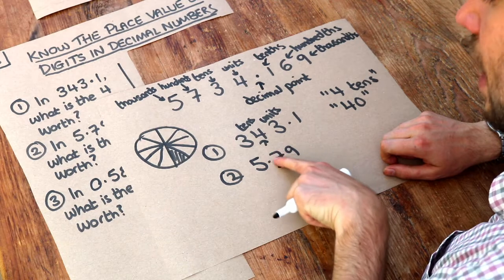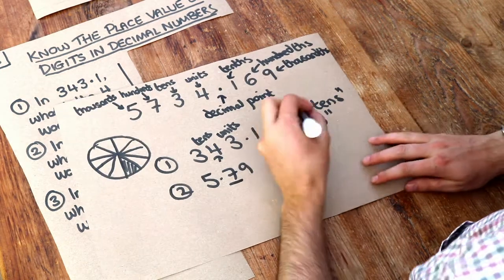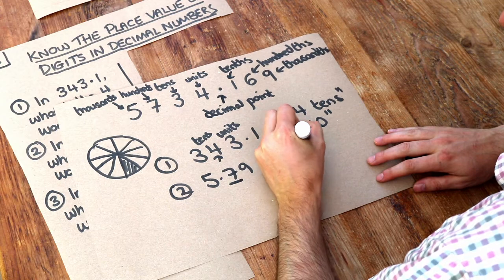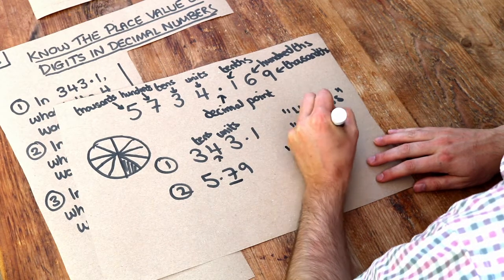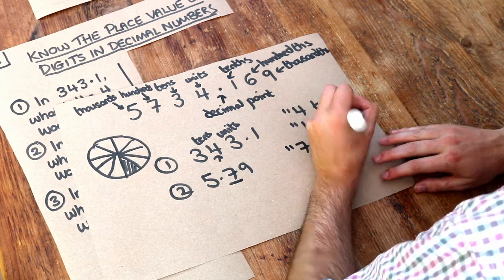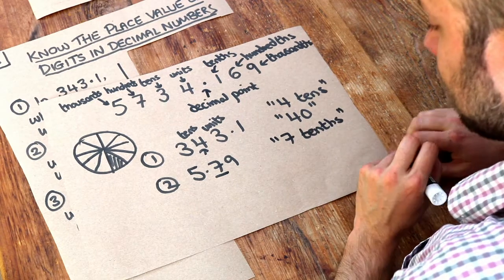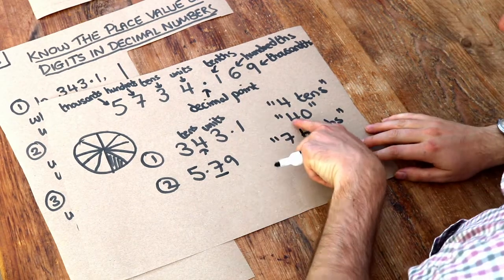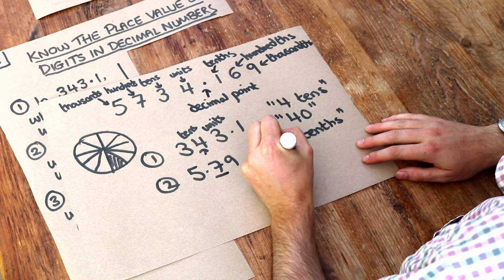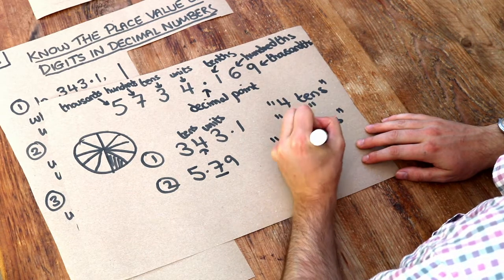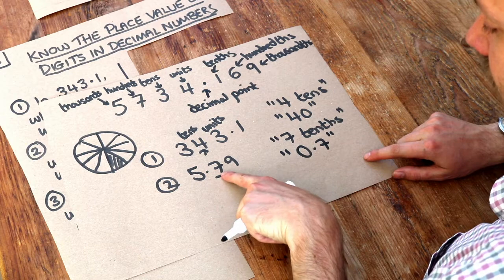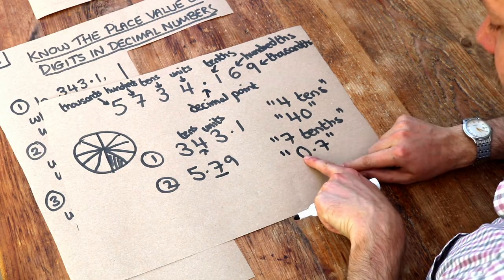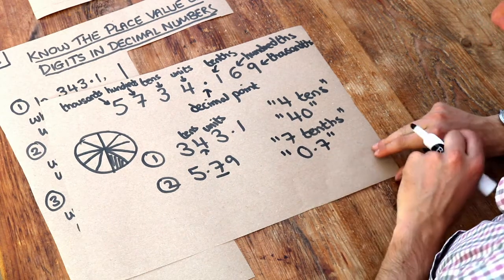We've got seven of them, so we have seven tenths. Don't forget the TH—it's not seven tens, it's seven tenths. We could write that as 0.7, because we're ignoring the units here and just concentrating on that digit. So we have zero units and seven tenths.